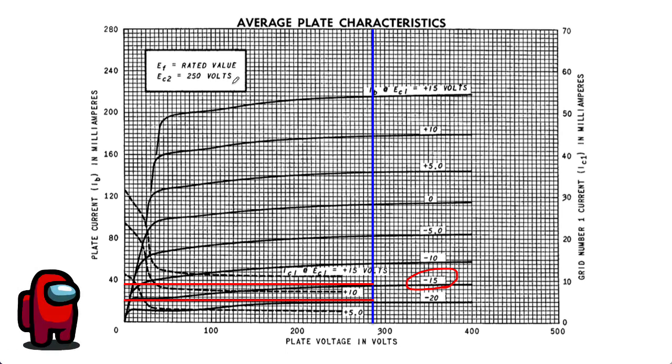The main clue is that we have a screen voltage here of 250 volts. But remember, our actual screen to cathode voltage is 286 volts. So we need to use some other graphs on the data sheet and extrapolate those a little bit to actually compute some large signal analysis and figure out how many watts of power we're delivering to the speaker. So we'll talk about that next time.